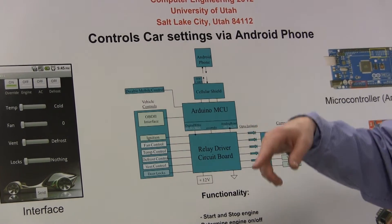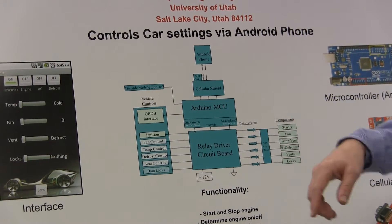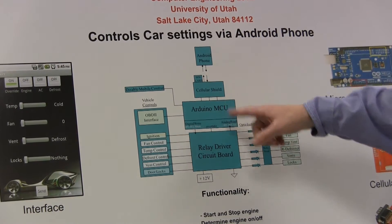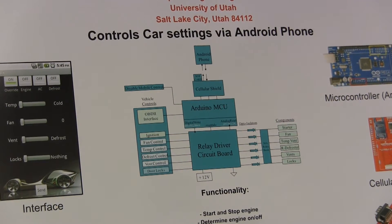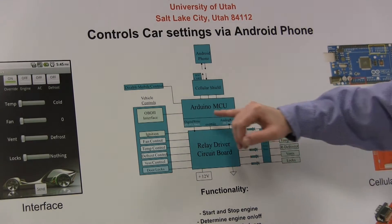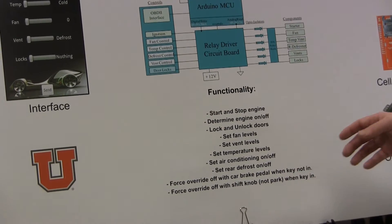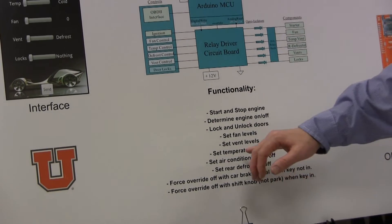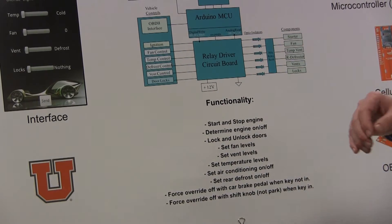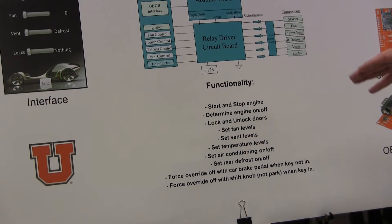At that point, the Arduino can take over and start acting as the control setting. We override the default settings and start acting with it. We're able to control the car, set all the fan and vent levels using servo motors — it's really simple. The temperature level is a little different; we had to use a potentiometer and a digital potentiometer, which was really very successful.